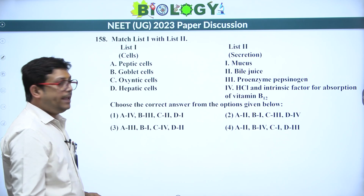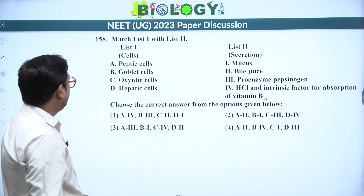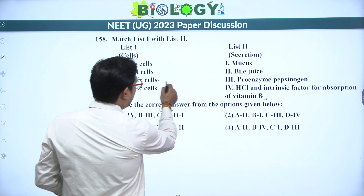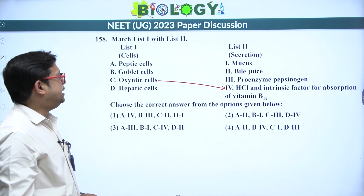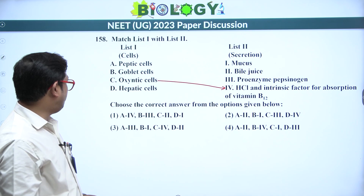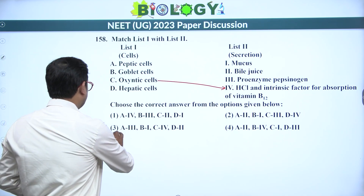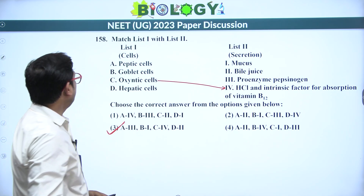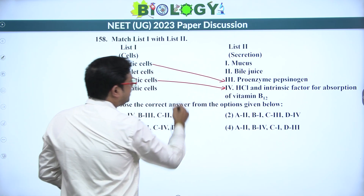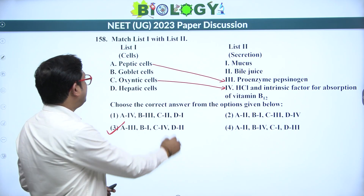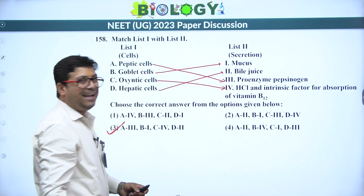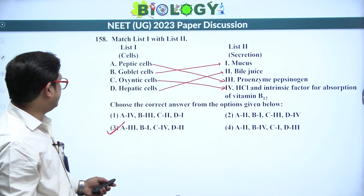Next: match the column for gastric cells. Oxyntic cells produce HCl and intrinsic factor for absorption of vitamin B12 — C is 4. Peptic cells (also called chief cells) produce the proenzyme pepsinogen — that is 3. Goblet cells secrete mucus and hepatic cells produce bile juice. Answer is 3.